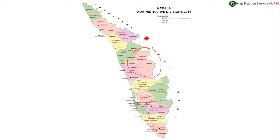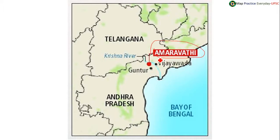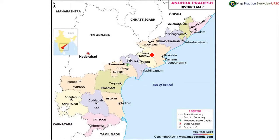Amravati was under debate and it is located on the Krishna River. Amravati is the capital of Andhra Pradesh. And Chittoor was in news — Chittoor is in Andhra Pradesh, specifically the southernmost district of Andhra Pradesh. It has a boundary with Karnataka as well as Tamil Nadu.